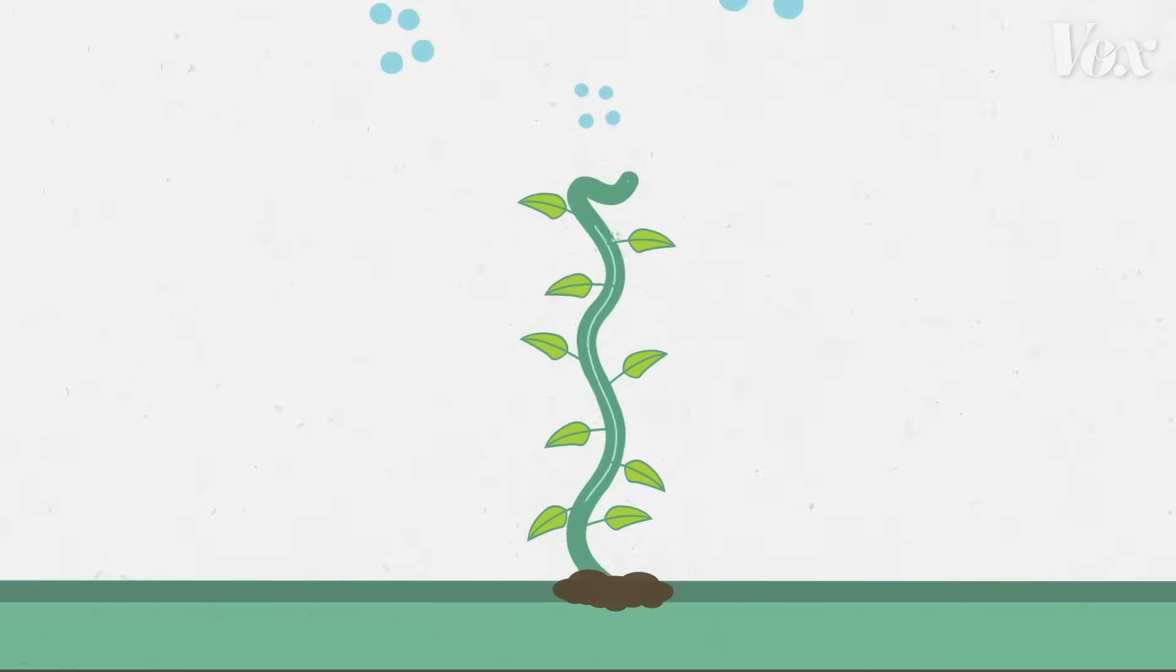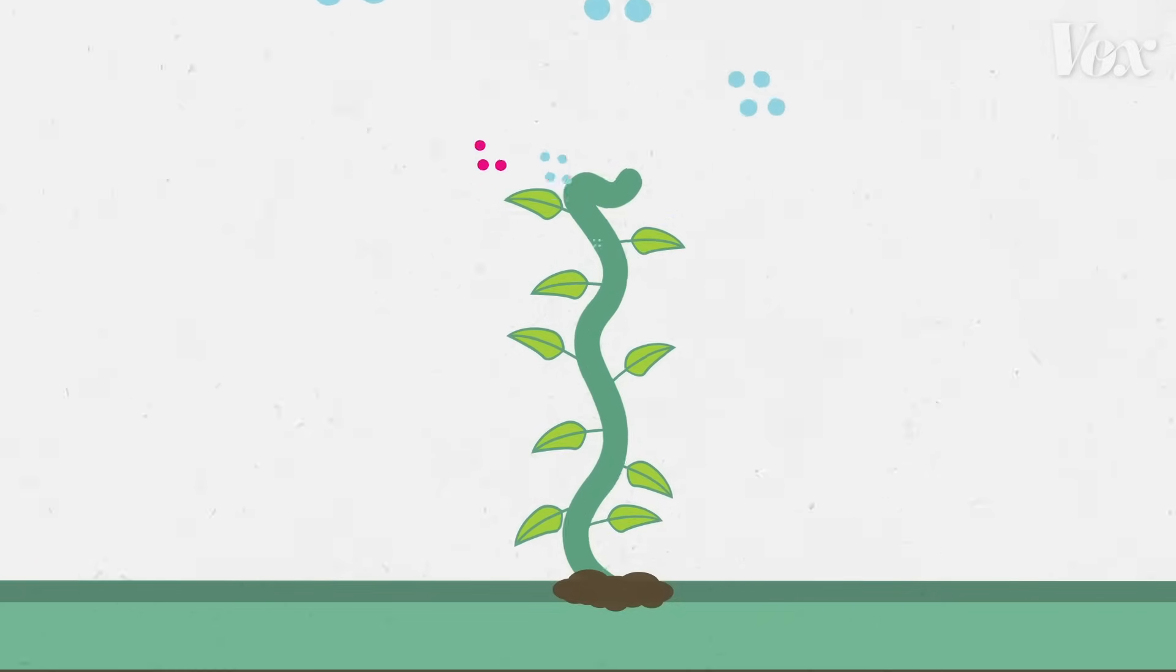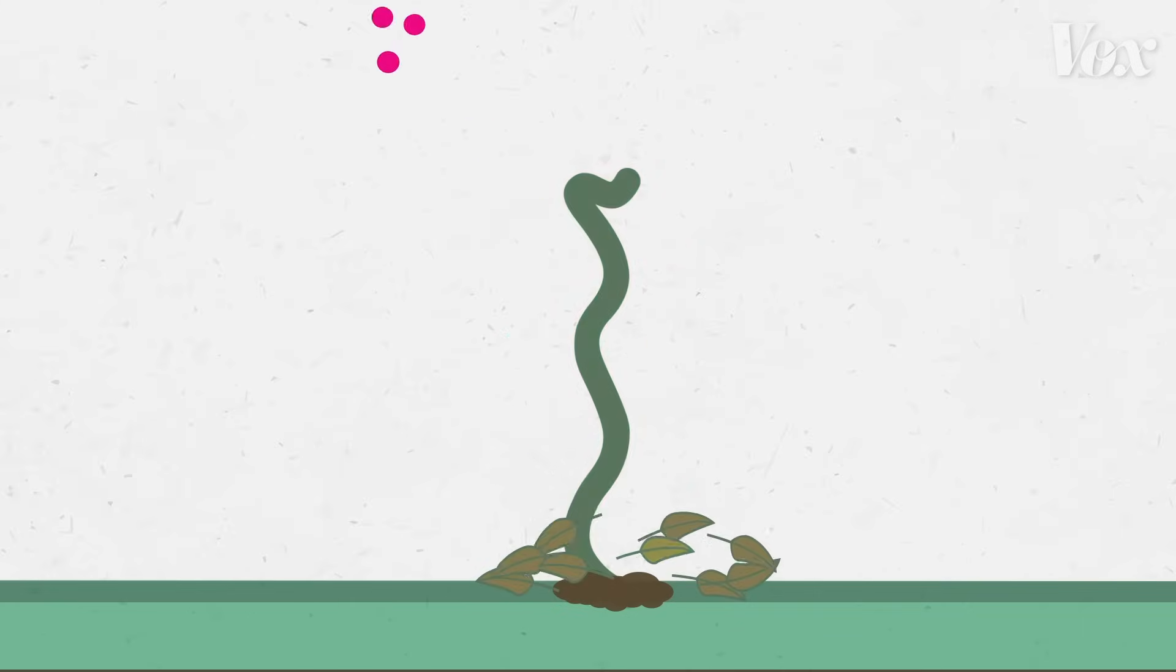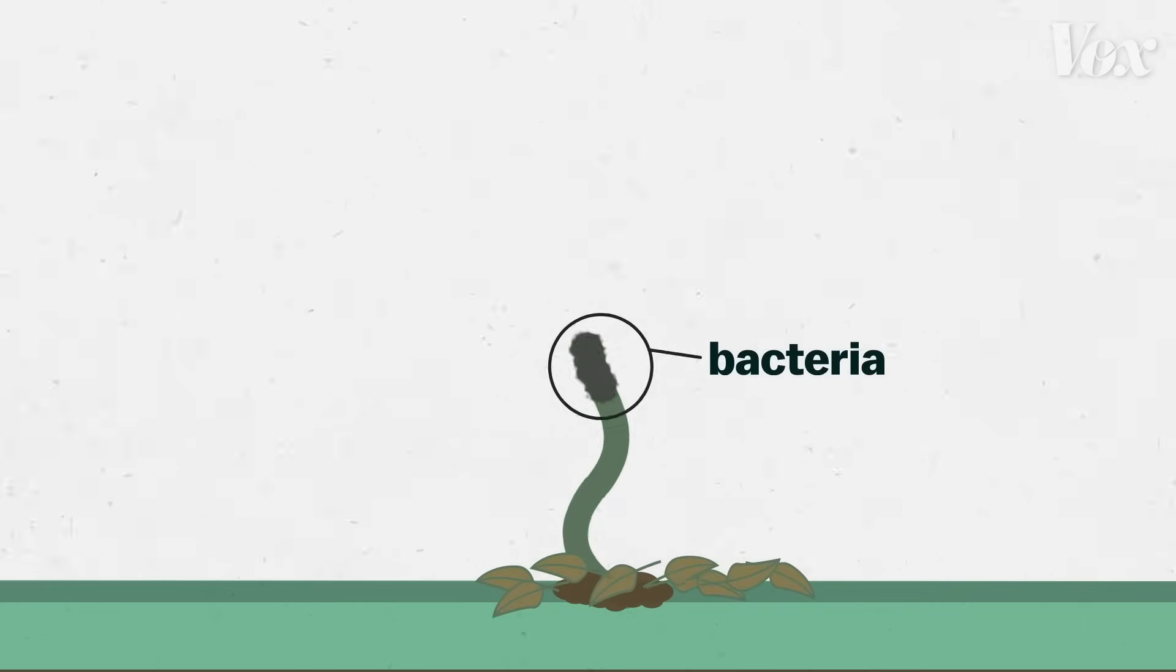And as they grow, they emit some carbon back into the atmosphere. But all plants eventually die, and some are consumed by bacteria, others by larger beasts.